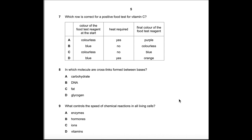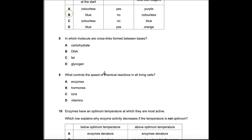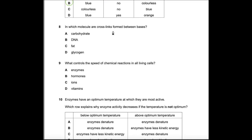Question 7: Which row is correct for a positive food test for vitamin C? The DCPIP reagent starts blue and turns colorless — no heat is required. Heat is required for the Benedict's solution test for reducing sugars. The answer is B.